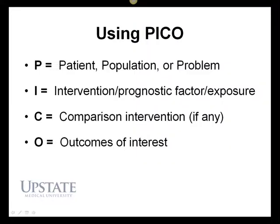PICO is an acronym that describes the elements of a well-formed clinical question. P equals patient, population, or problem. I equals intervention, prognostic factor, or exposure. C equals comparison intervention. O equals outcomes of interest.